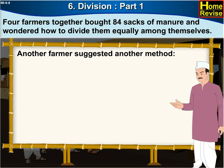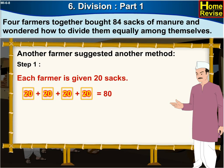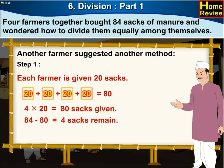Another farmer suggested another method. Step 1. Each farmer is given 20 sacks. 20 plus 20 plus 20 plus 20 is equal to 80. Four times 20 is equal to 80 sacks are given. 84 minus 80 is equal to 4, so 4 sacks remain.